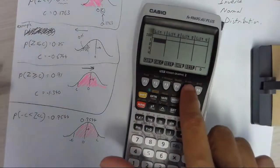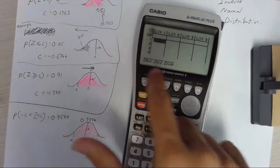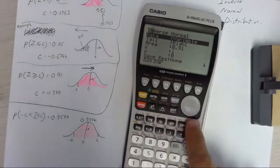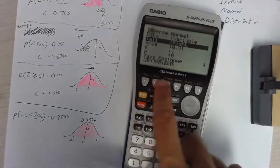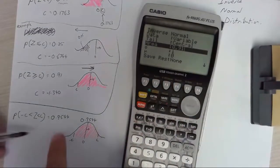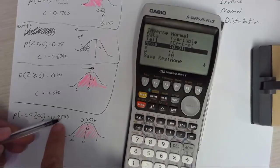We have our normal distribution. Distribution. Normal distribution. Inverse. Let's use a center tail right now. Center. And the area we're interested in is 0.9544.